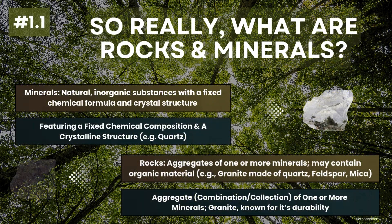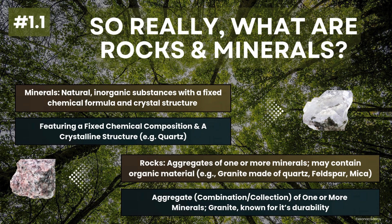Slide 1.1. Let's start with the basics. Minerals are naturally occurring inorganic substances that have a fixed chemical composition and a crystalline structure. For example, quartz is a common mineral prized for its hardness and clarity. In contrast, rocks are aggregates of one or more minerals and sometimes include organic material. A well-known example is granite, which is composed primarily of quartz, feldspar, and mica. Granite is renowned for its durability and is widely used in construction.